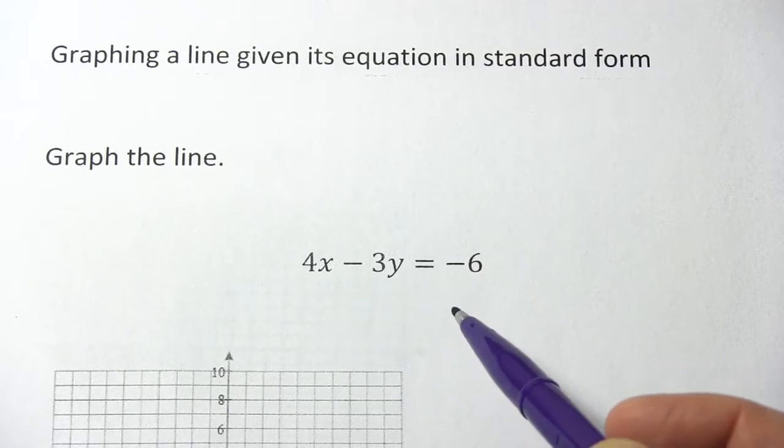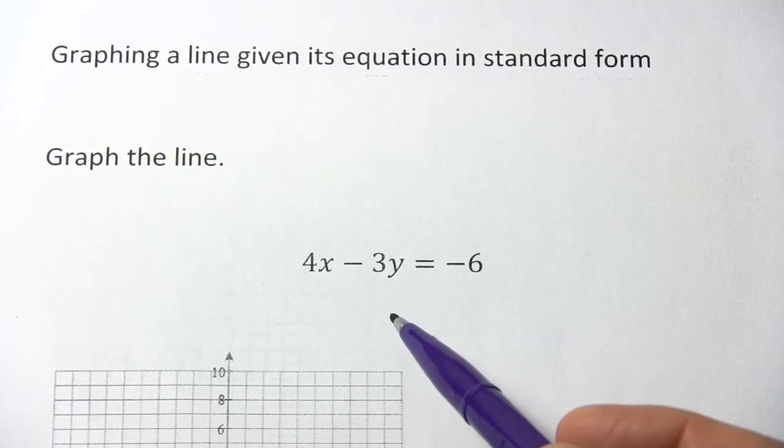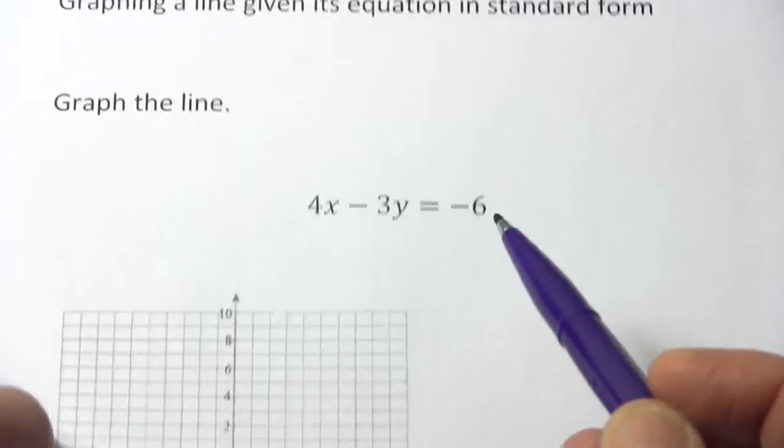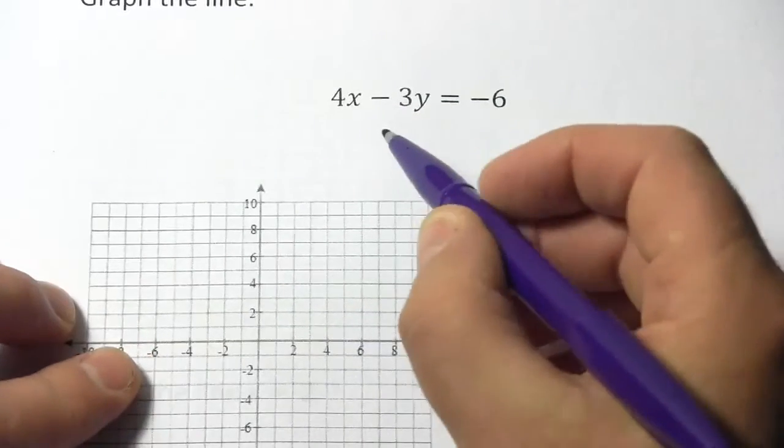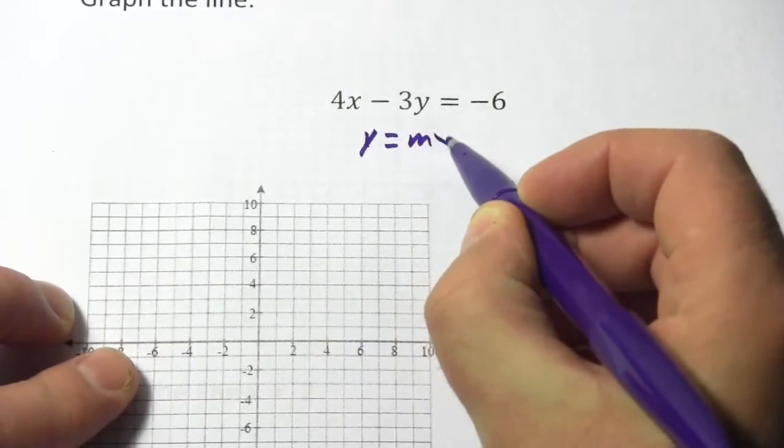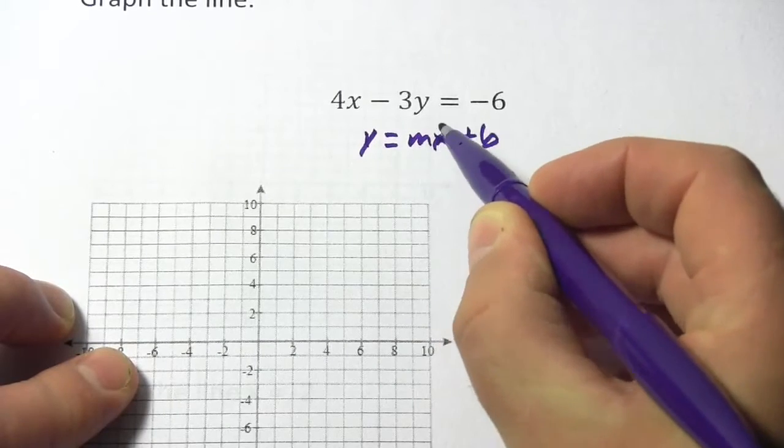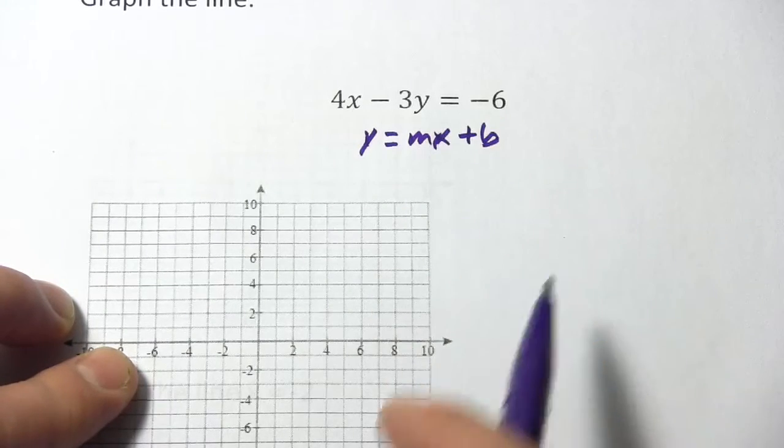This isn't the most easy form to graph the line from, so what I like to do first is convert this into slope-intercept form. So we want this to be in the form of y equals mx plus b. Then we've got the slope m and the y-intercept b.